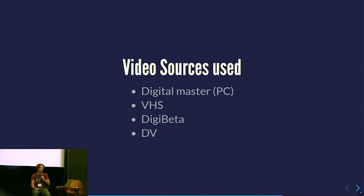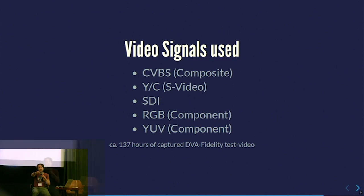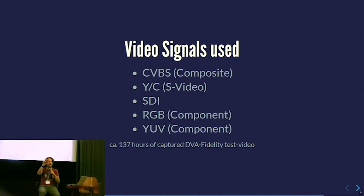We tested this for digital master fidelity — you can use it to test any video signal chain for timing and recording fidelity. We made a VHS tape, a Digi Beta, and a DV tape over several different signal outputs. With the detection you can also tune how much noise it allows these colors to have, because when you transfer a VHS you won't get a perfect red or perfect green, so you can tune it to not deliver too many false positives.